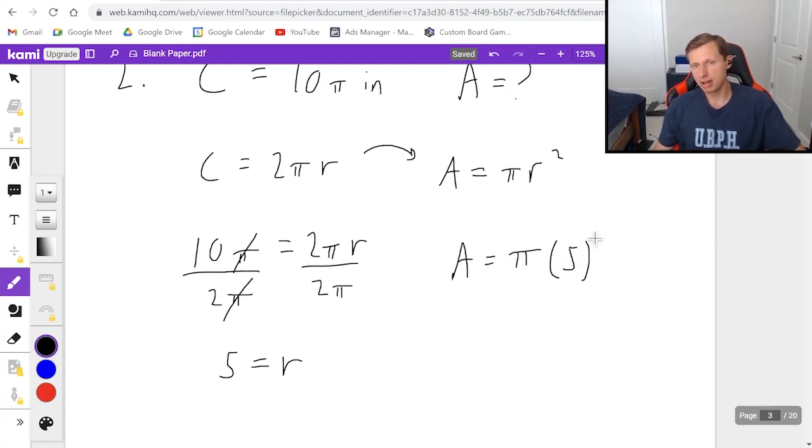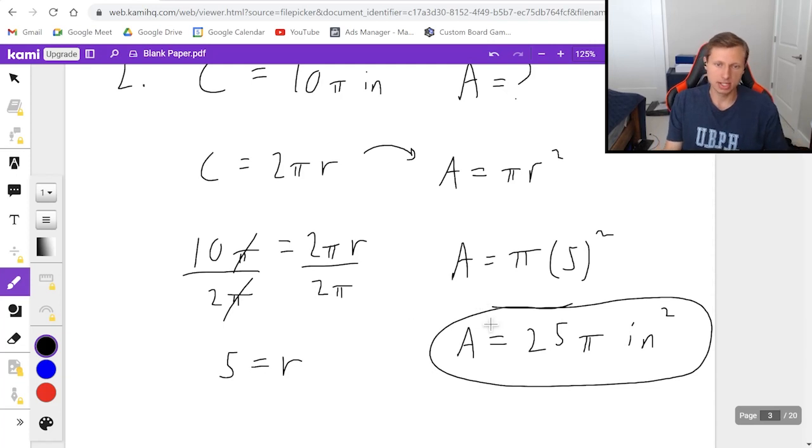Area equals pi times 5 squared. So that means area equals 5 squared is 25 times pi. And the units, in this case, since they were inches for circumference, area is going to be inches squared. And there we go. That's it for the second one.